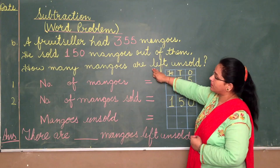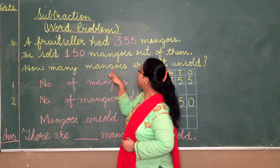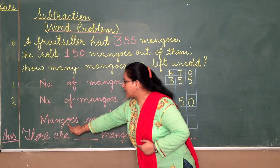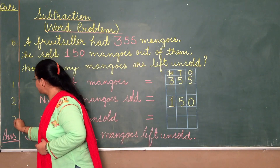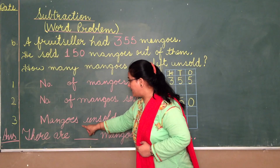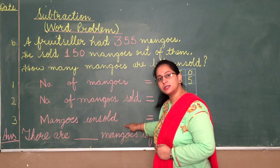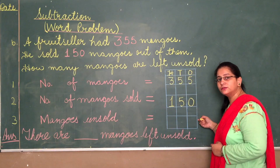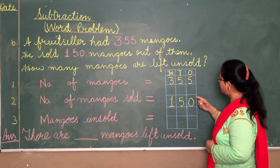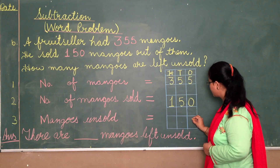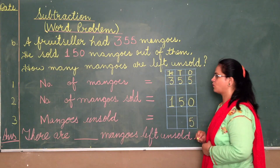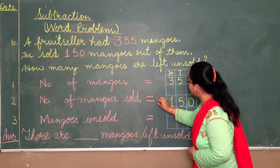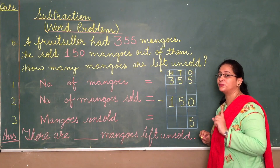The third sentence is: how many mangoes are left unsold? So the third statement is: mangoes unsold. We will subtract here. First we do the ones house: 5 minus 0, take away 0 from 5, so 5 comes. Now take away 5 from 5.